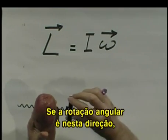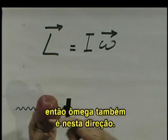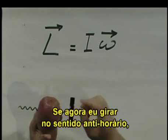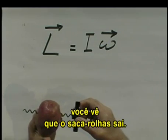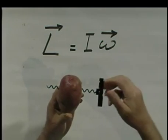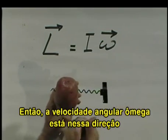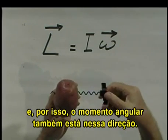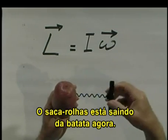So if the angular rotation is in this direction, then omega is in this direction. If I go counterclockwise, the corkscrew comes out, so now the angular velocity omega is in this direction, and therefore the angular momentum is also in this direction. The corkscrew is now coming out of the potato.